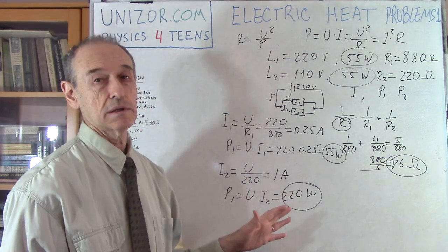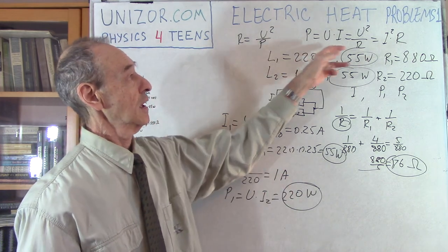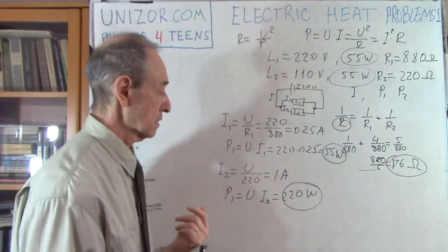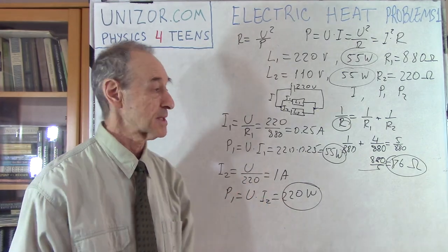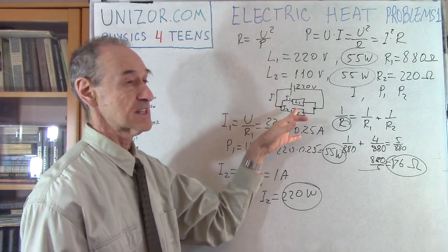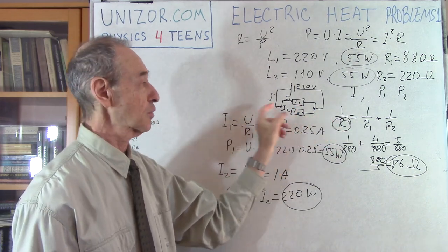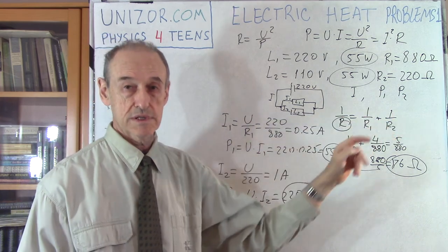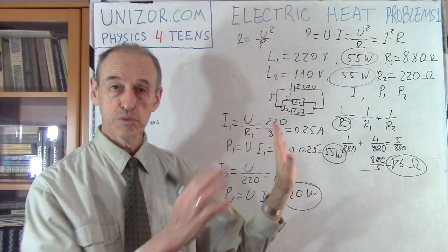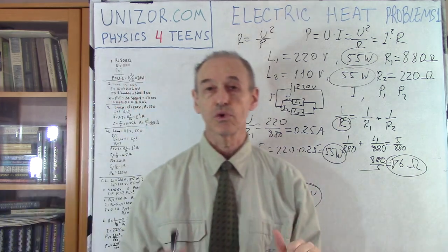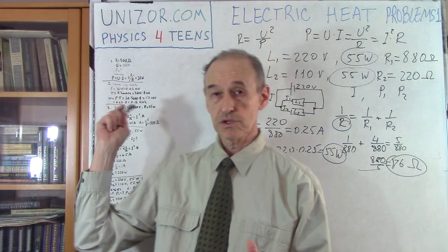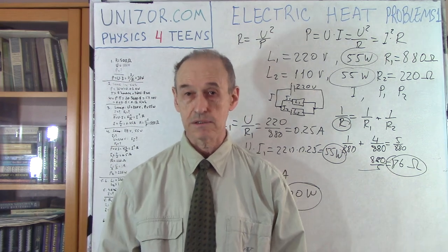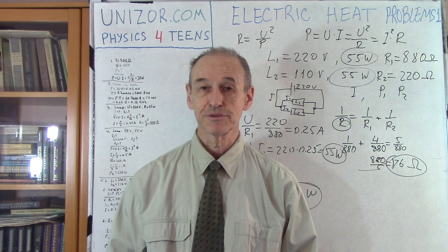That's the end of this set of problems. The problems are very easy and involve two laws: Ohm's law and Joule-Lenz law related to heat. Everything else is general common sense. You also need to know how resistance is calculated in series connections - resistances add together - and in parallel connections - inverse of resistances are added. I suggest you solve all these problems yourself on unizor.com and check against the answers provided. That's it for today. Thank you very much and good luck.